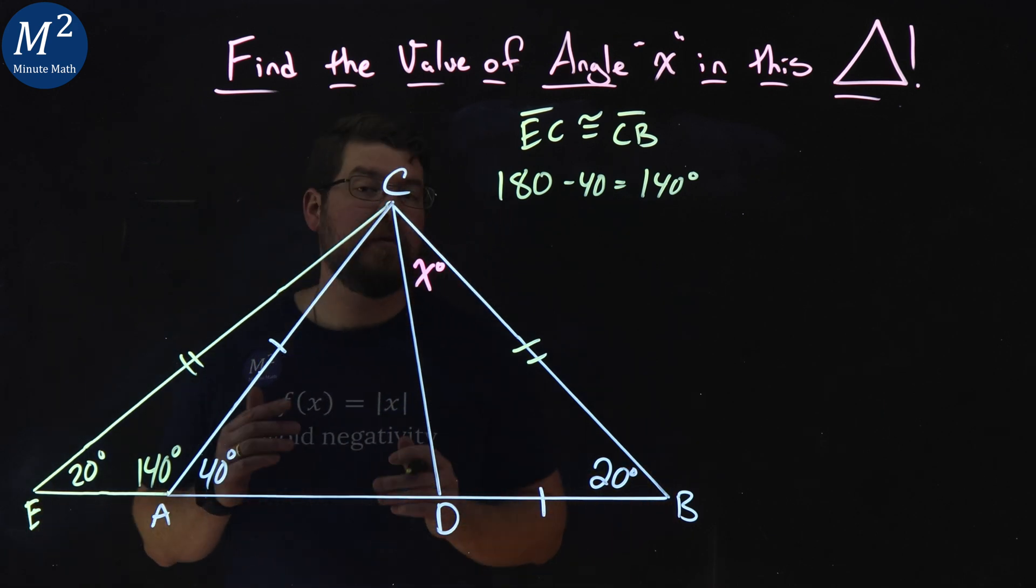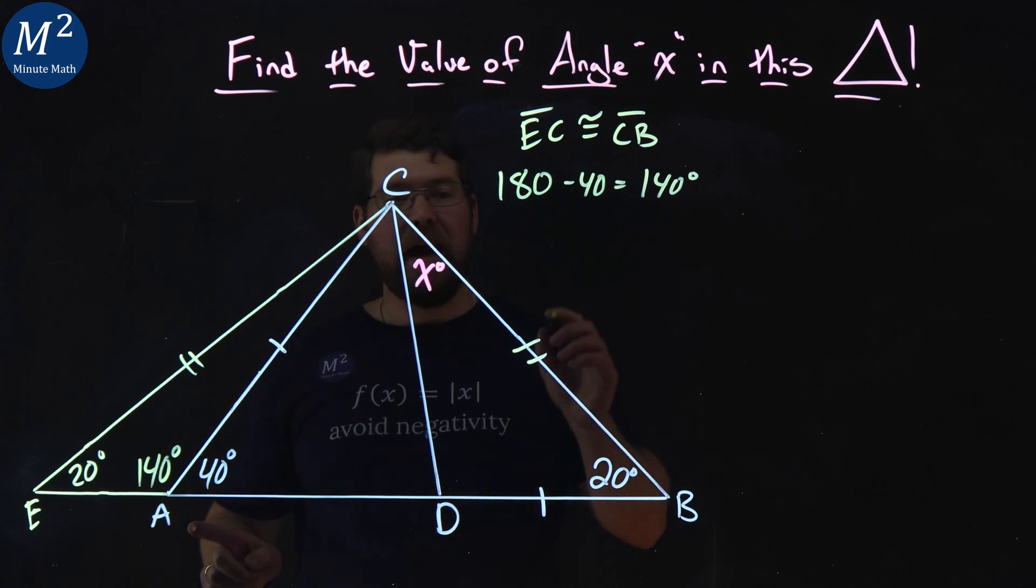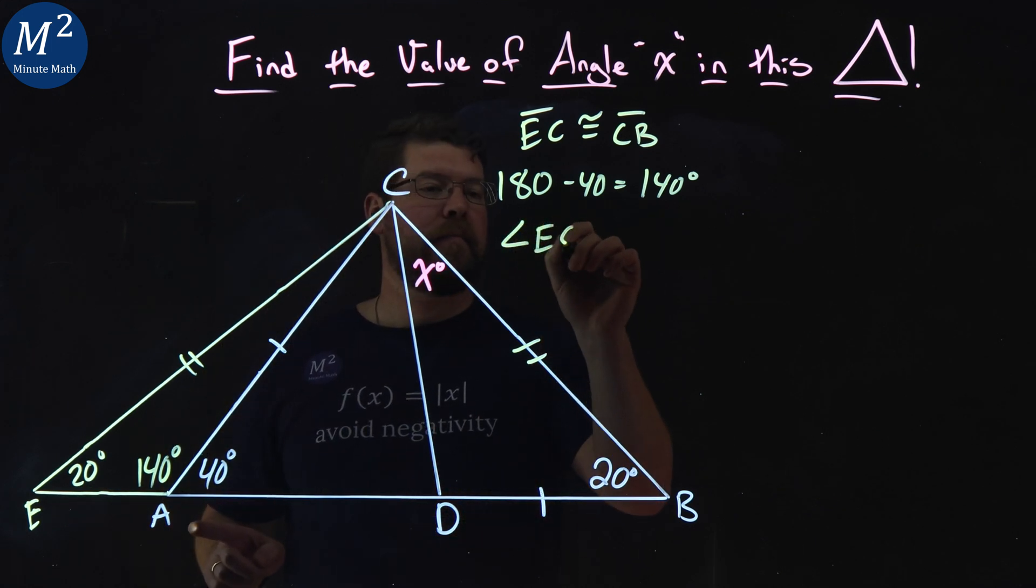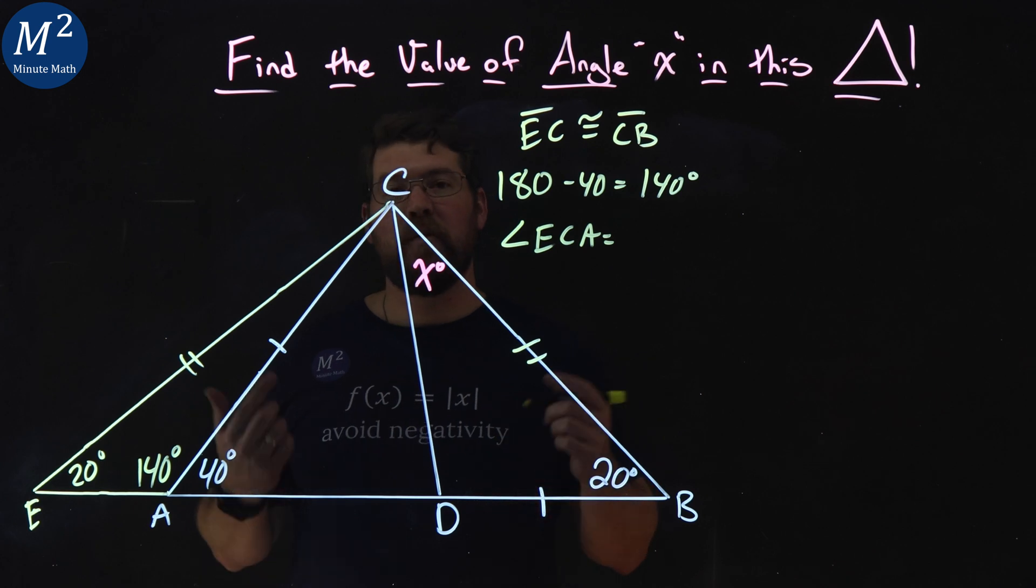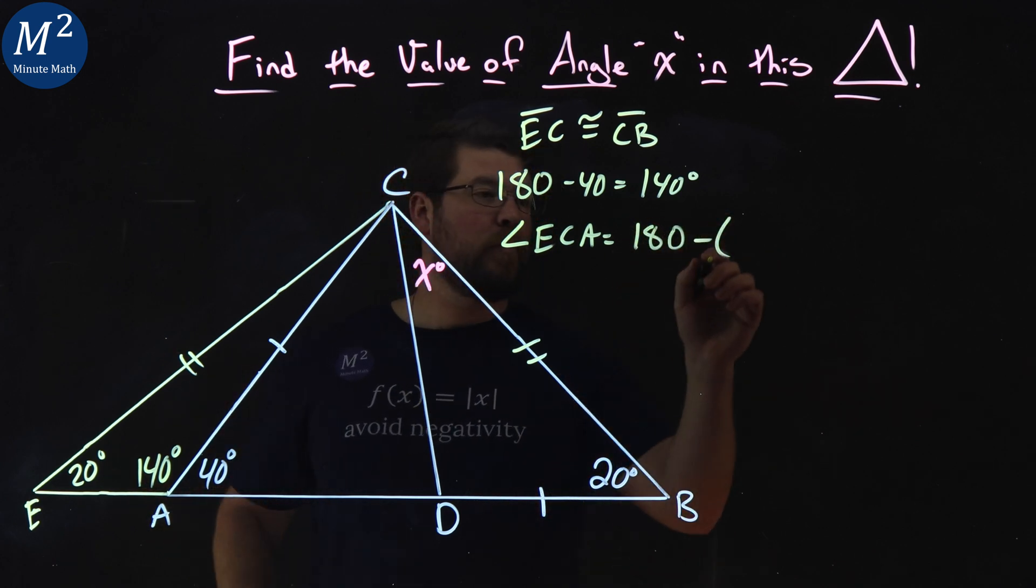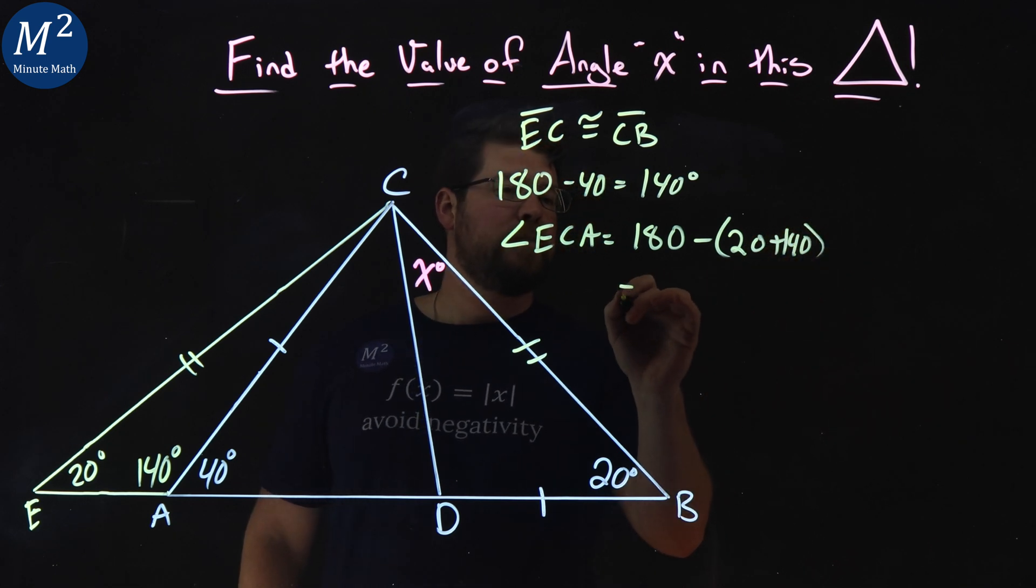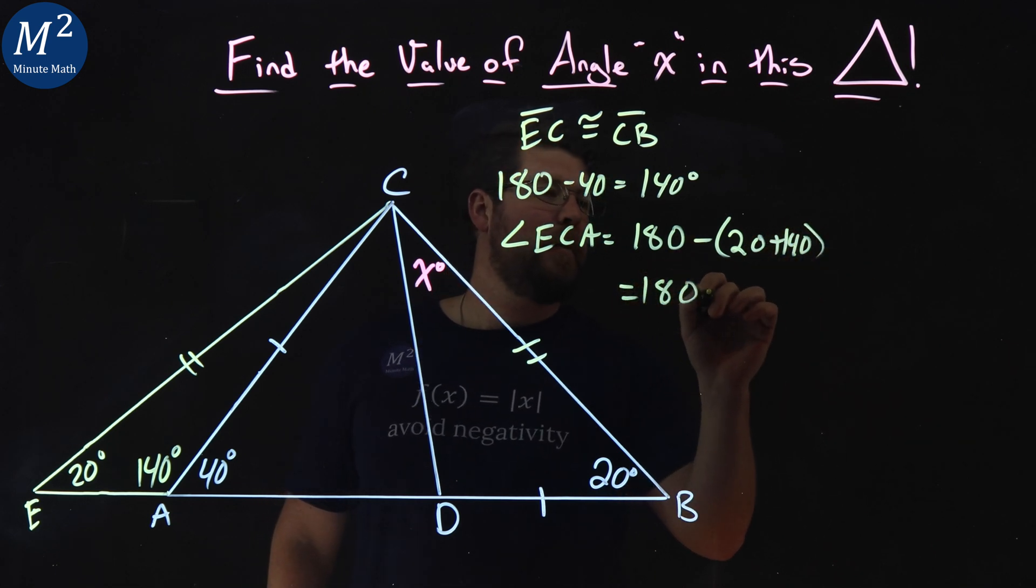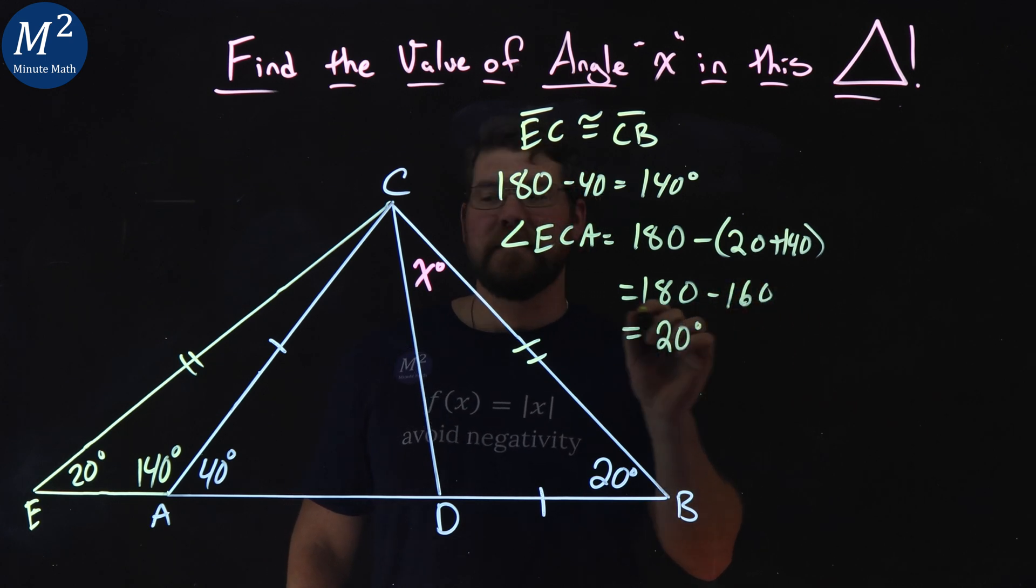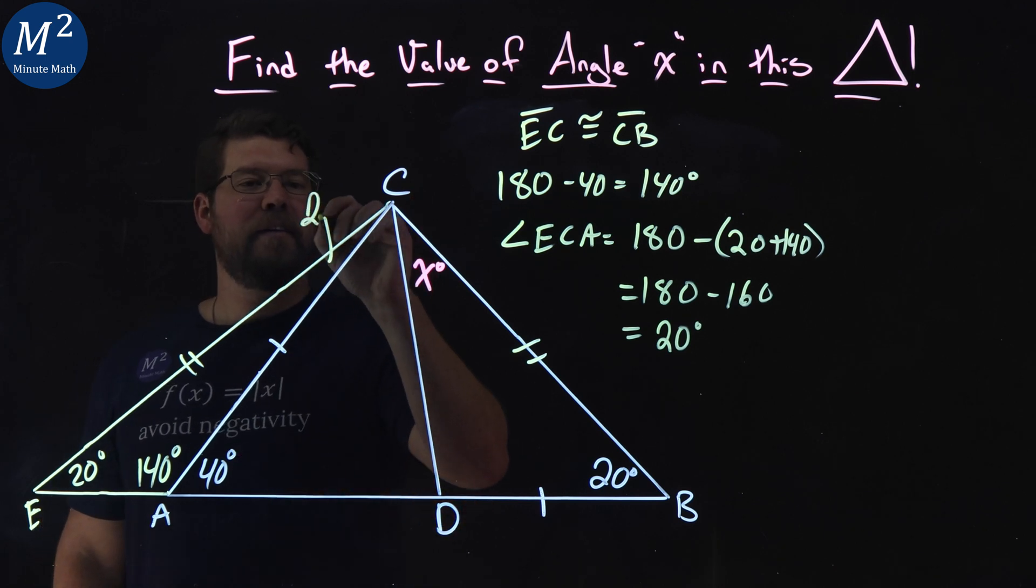Also, every triangle adds up to 180 degrees. So angle ECA is equal to 180 minus 20 and 140, which is 180 minus 160. So we have 20 degrees as well. So angle ECA right here is 20 degrees.